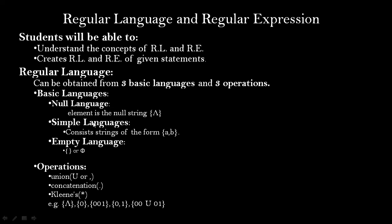The second language is the simple language, where we construct strings using alphabets like a, b, c, d, etc. The simple language consists of strings of the form {a, b}, meaning a collection of alphabets and strings formed from them. The third language is the empty language, which contains no elements and is represented by empty curly brackets {} or the symbol phi.